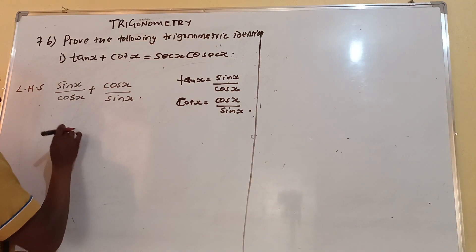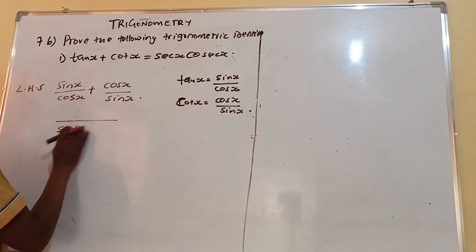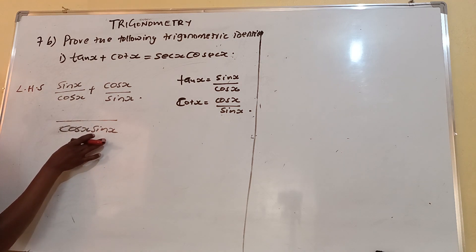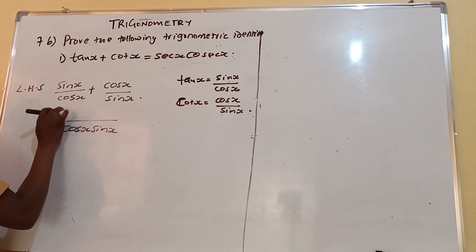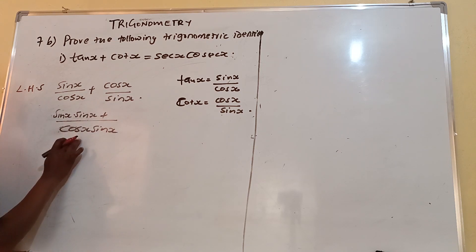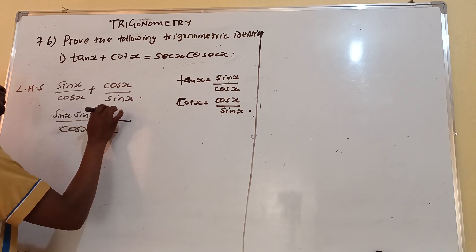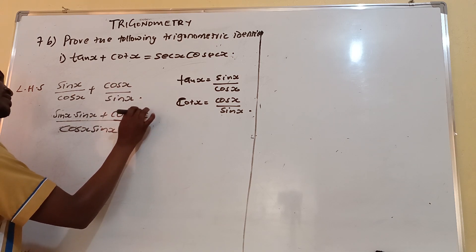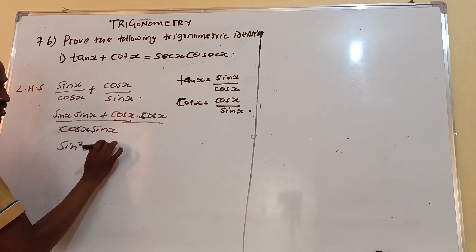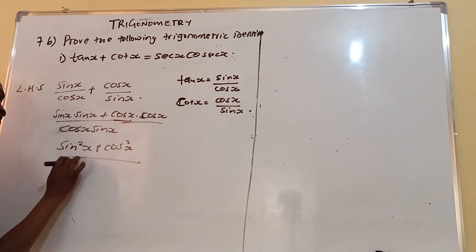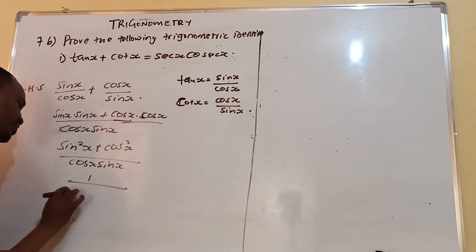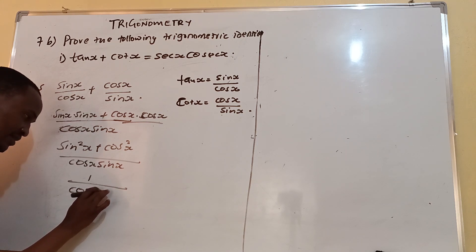We will now find the common denominator, which will be cos X times sin X. Taking this and dividing by that, it will be sin X times sin X on the numerator. Plus, taking this and dividing by that, it will be cos X times cos X. This gives us sin squared X plus cos squared X, all over cos X sin X. But we know sin squared X plus cos squared X is 1.